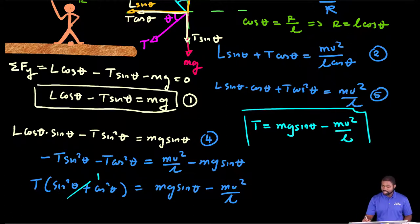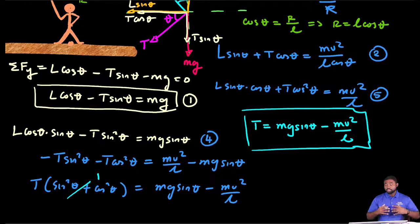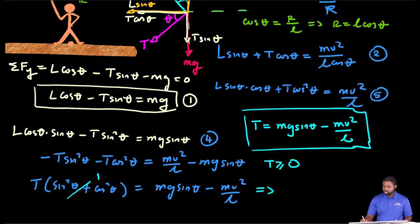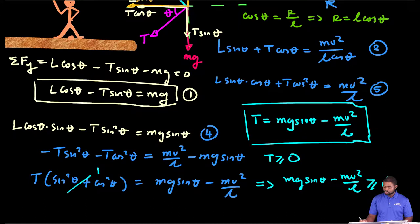So we've calculated the tension in the string. Now, part of the question is to determine the angle at which we have to, the minimum angle that we need to fly the plane for it to be stable. At all times, T must be greater than or equal to 0. So this means that mg sine theta minus MV squared over L must be greater than or equal to 0.